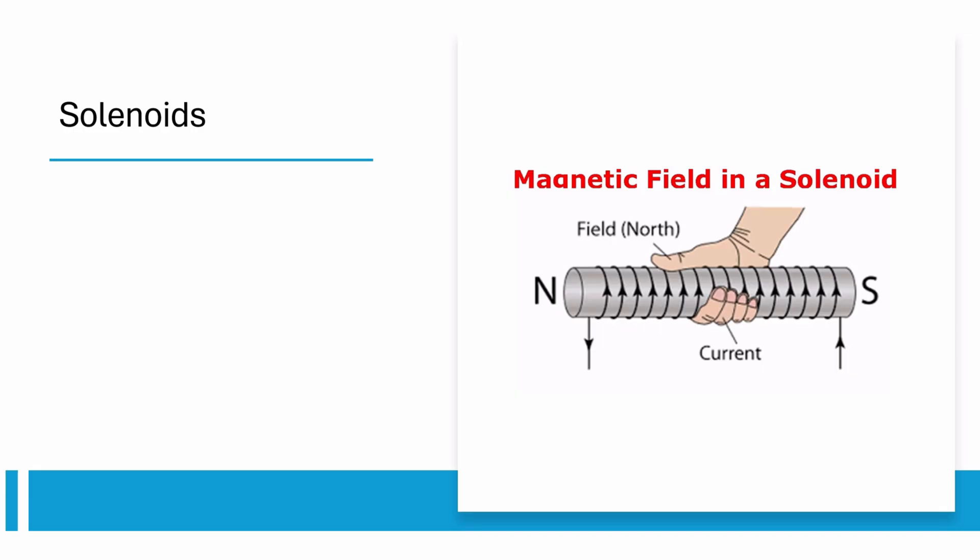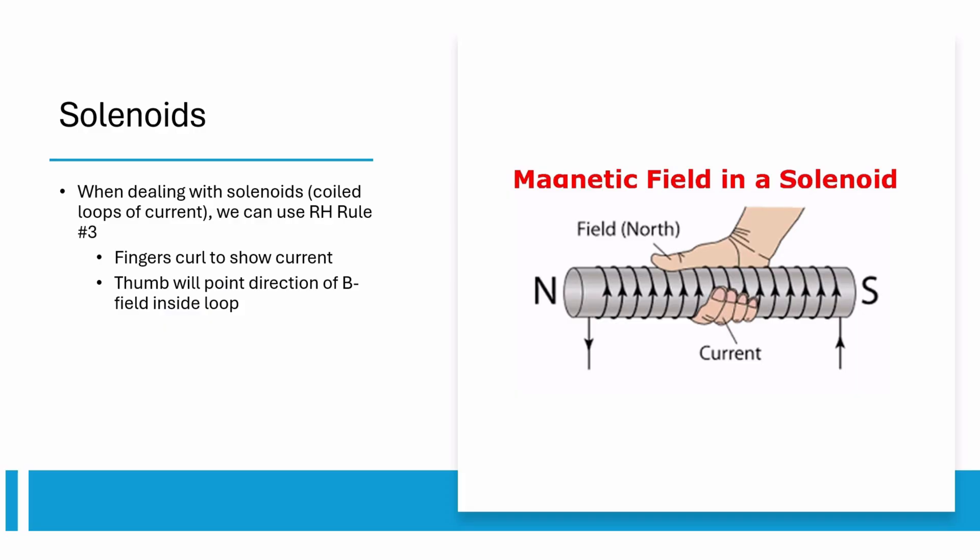Our last topic for this unit is solenoids. We have another right-hand rule for solenoids. Curl your fingers in the direction of current and your thumb points toward the north end of the solenoid, or towards the B-field inside the solenoid.